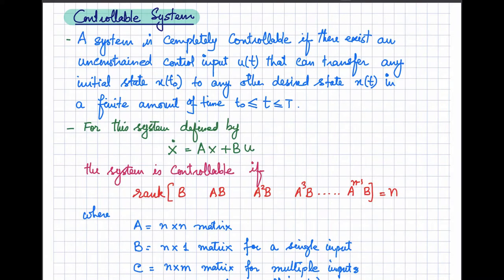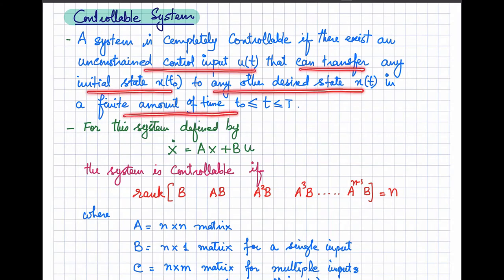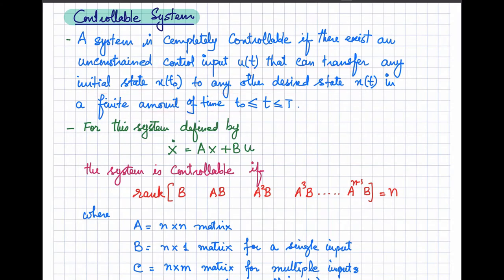In this video we will discuss controllable systems. A system is said to be completely controllable if there exists an unconstrained control input that can transfer any initial state to any other desired state in a finite amount of time. If such an unconstrained input can change the state of the system to any desired state in a finite amount of time, then that system is said to be a controllable system.